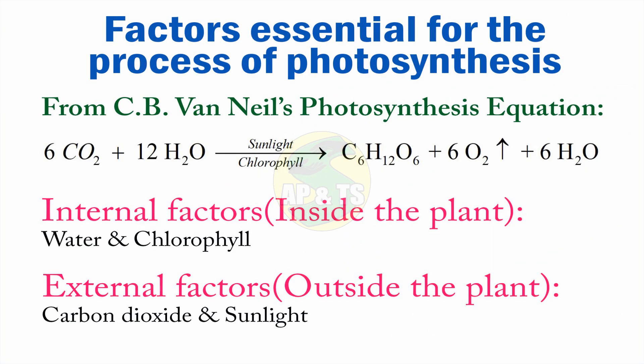Now let us see the Factors Essential for the Process of Photosynthesis. In the previous videos, you have seen CB Van Niel's Photosynthesis Equation. According to that: 6CO₂ + 12H₂O in the presence of sunlight and chlorophyll gives C₆H₁₂O₆ + 6O₂ + 6H₂O. On the left side, you can see 6 carbon dioxide and 12 water molecules, and just above and below the arrow mark, you can see sunlight and chlorophyll. So carbon dioxide, water, sunlight, and chlorophyll — these four are the factors needed to perform photosynthesis.